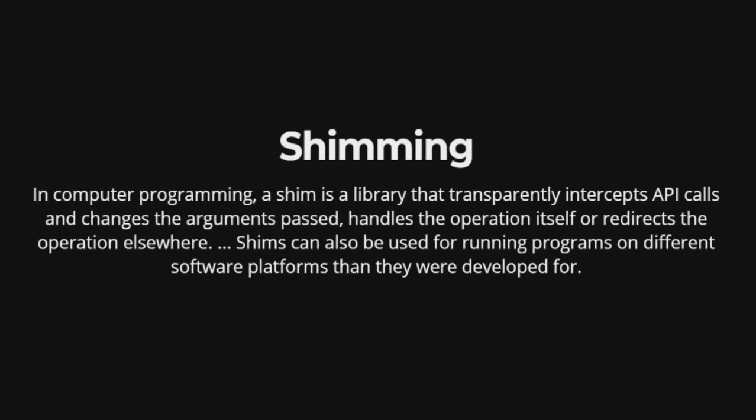Shimming: In computer programming, a shim is a library that transparently intercepts API calls and changes the arguments passed, handles the operation itself, or redirects the operation elsewhere. Shims can also be used for running programs on different software platforms than they were developed for.